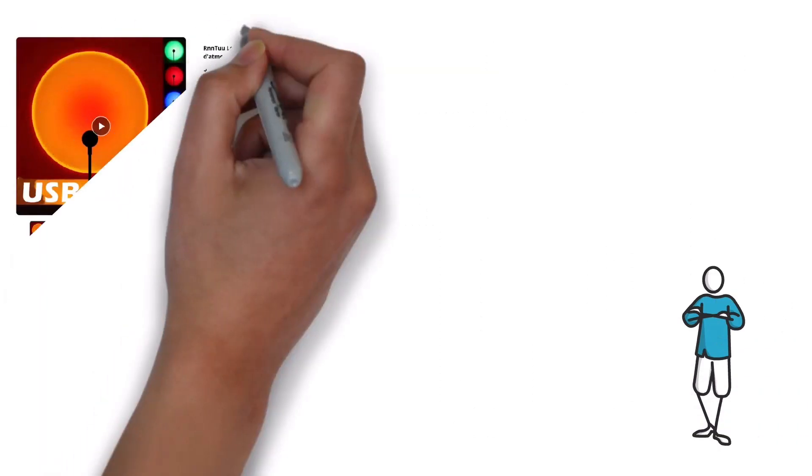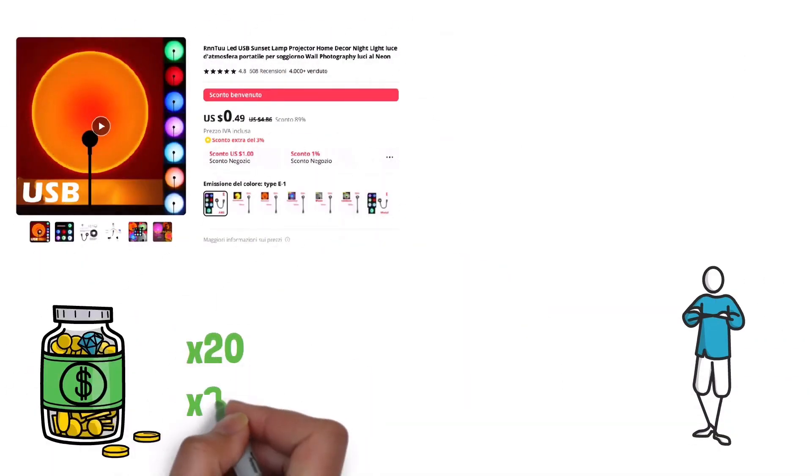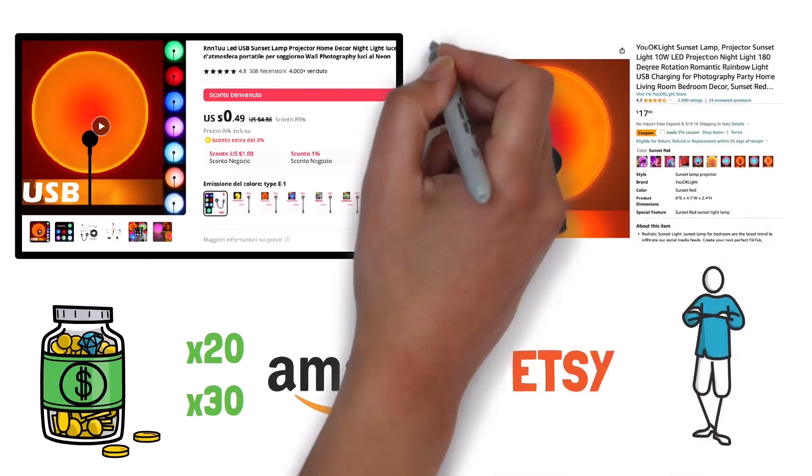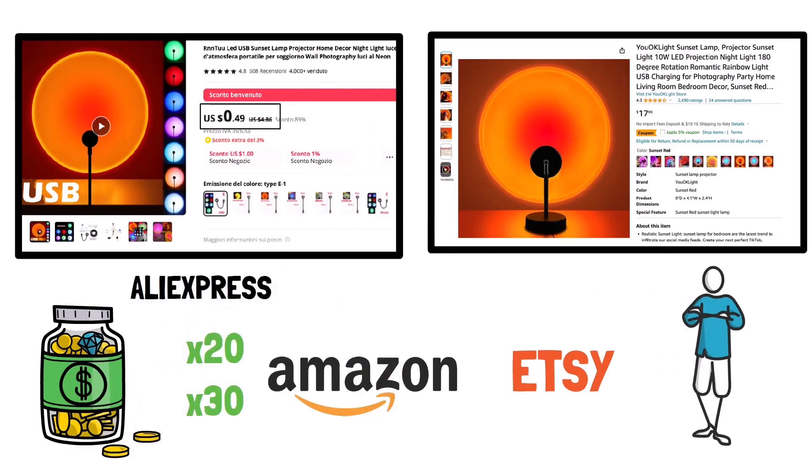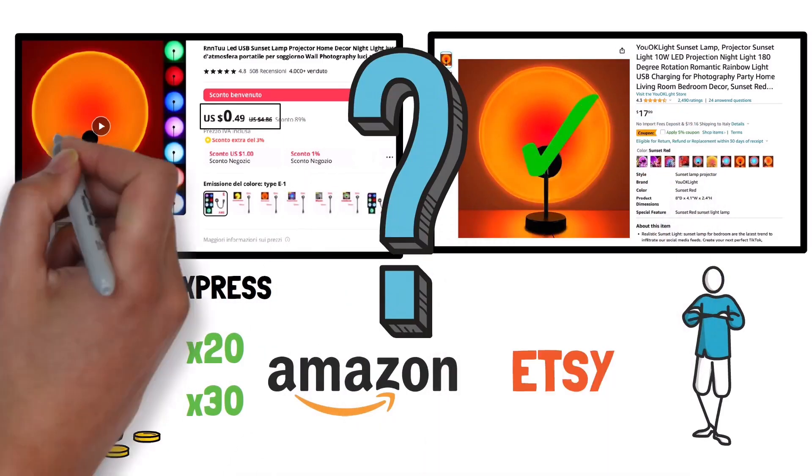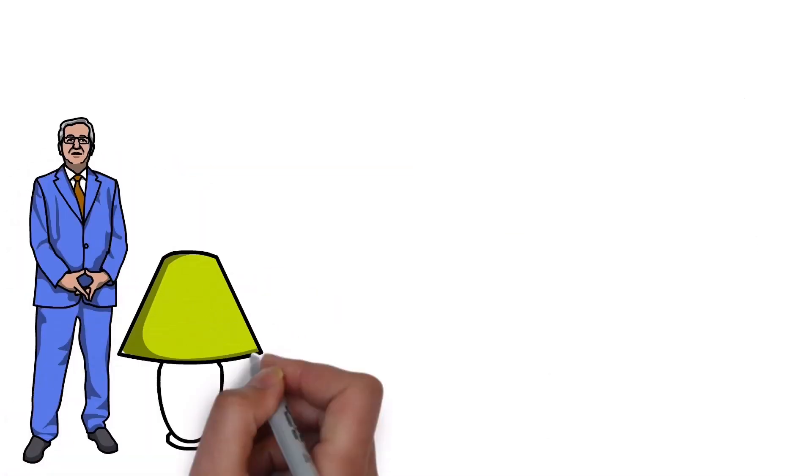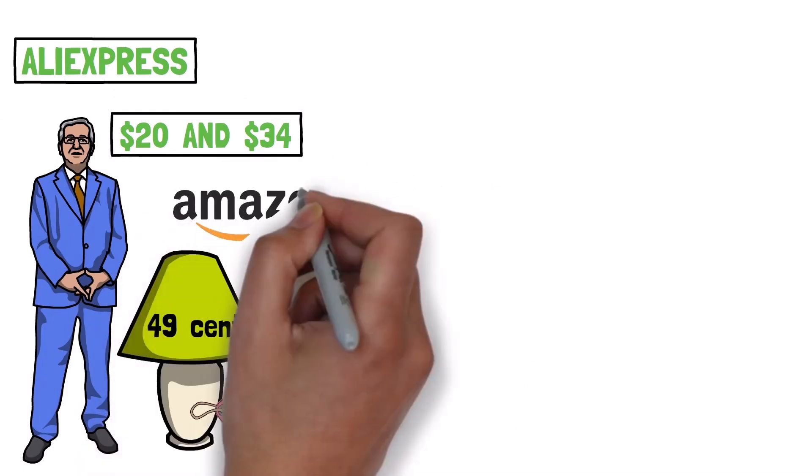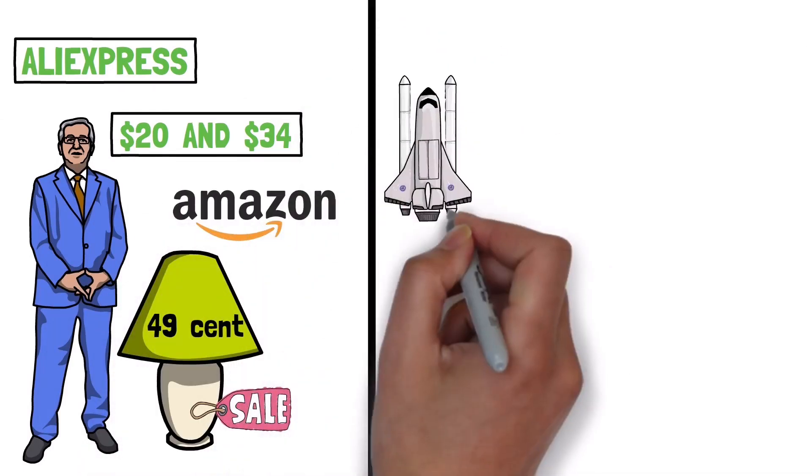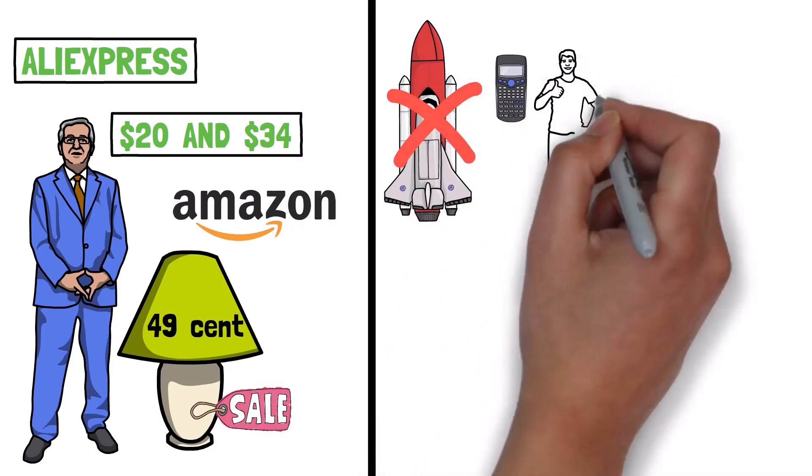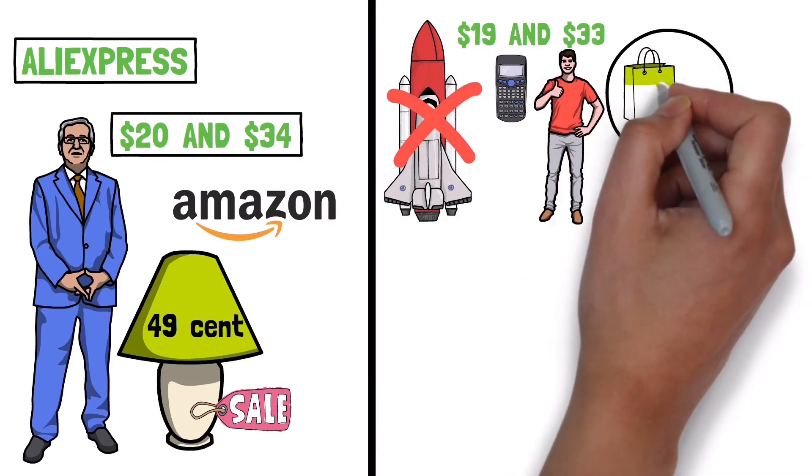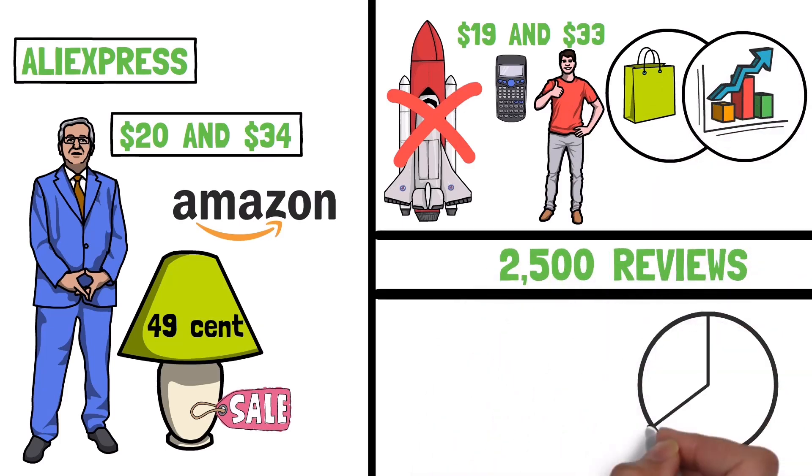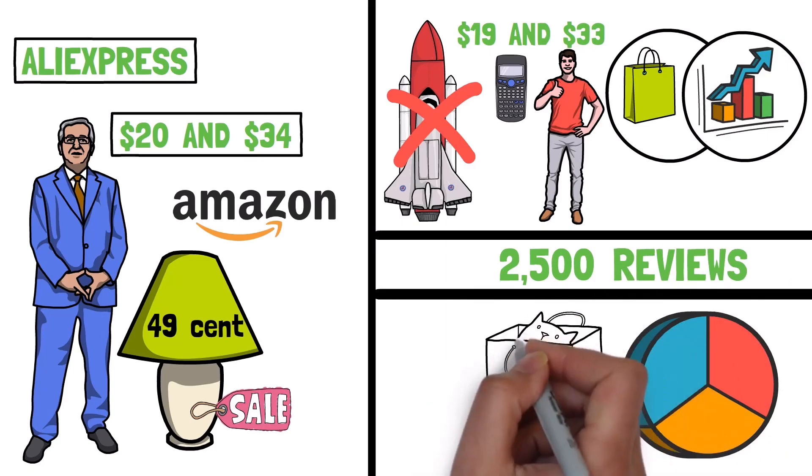Products like this sunset projection lamp, which only costs 49 cents, could easily be sold for 20 or 30 times the amount on sites like Amazon and Etsy. In fact, this is literally the exact same product as the one that only costs 49 cents on AliExpress. How do I know? Well, because the Amazon product is even using the exact same images from AliExpress. This person is buying this lamp for 49 cents on AliExpress and then selling it for between 20 and 34 dollars on Amazon. Now, I'm not a rocket scientist, but according to my calculator, that means they're making between 19 and 33 dollars in revenue for every single sale. And we know these things are selling extremely well because they have close to 2,500 reviews. So, this seller is definitely earning over six figures per year with this one product alone.